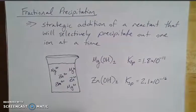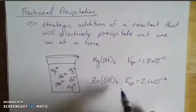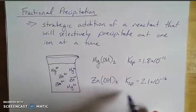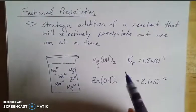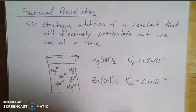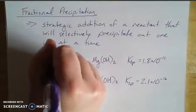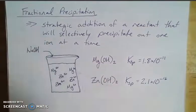So based on what we know about KSP, if we're comparing the two, the KSP value for zinc hydroxide is significantly smaller than magnesium hydroxide. So if I was to add a strong base to this, let's add sodium hydroxide, or lye, or caustic soda.